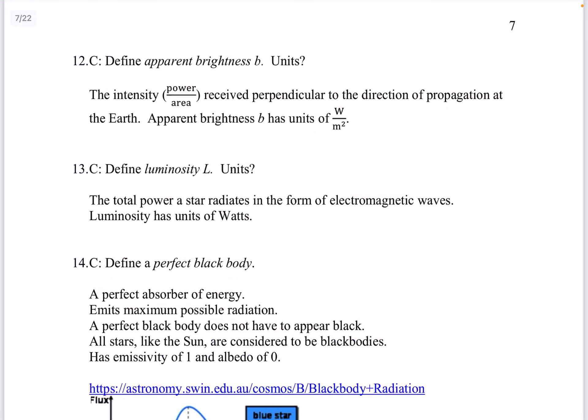Question 12. Define apparent brightness units. Apparent brightness is the intensity which is power per unit area received perpendicular to the direction of propagation at Earth. The apparent brightness B has units of watts per meter squared. Remember intensity in topic B and C is power per unit area. Intensity in topic E.2 is number of photons per second.